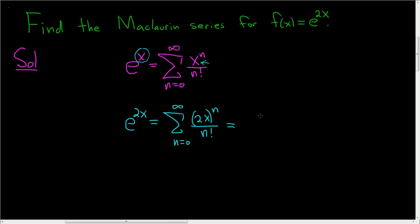We can clean this up. This is the infinite sum, as n runs from 0 to infinity. Using the properties of exponents, this piece here can be written as 2 to the n, x to the n. And in the denominator, we still have n factorial.